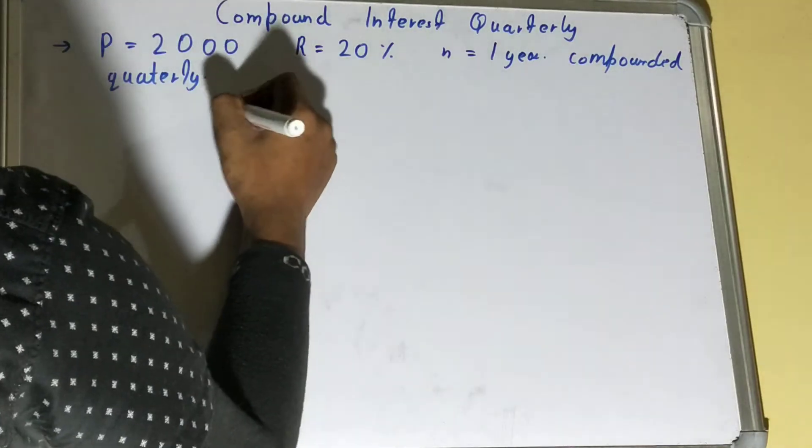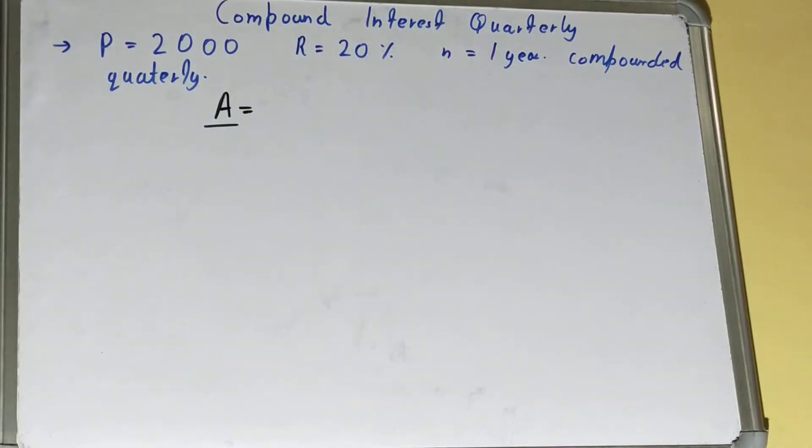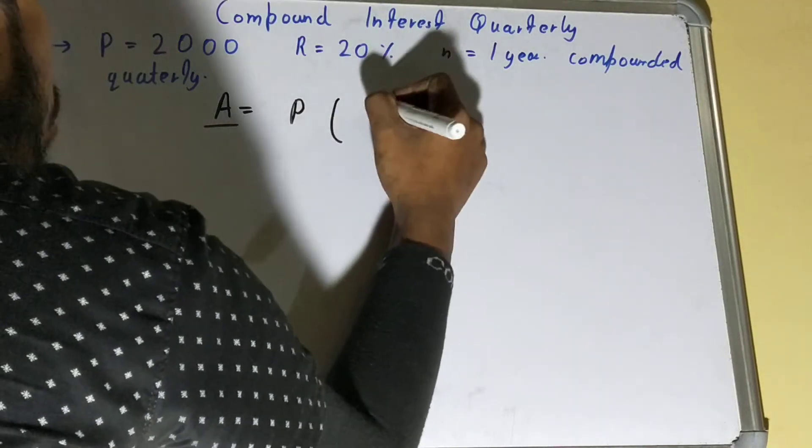Let's see the formula first. That is A, we'll have the amount. To calculate the compound interest, we need to subtract the principal amount from your amount. So your amount equals P times 1 plus...